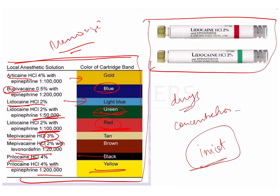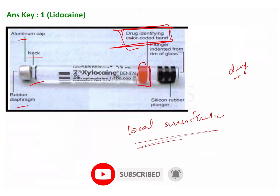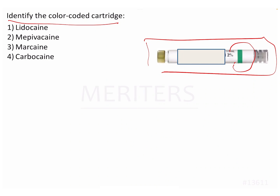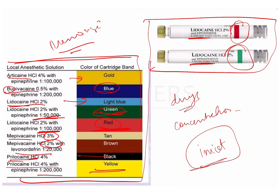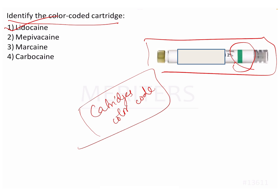Here is an example of a cartridge. This one is lidocaine 2% with 1:100,000 epinephrine, whereas this one is 1:50,000 — you can see the difference in the color code. In our question, the green cartridge, as I said, is lidocaine. Mepivacaine was tan and brown. This is the cartridge color code — just note it down and revise it.